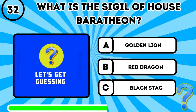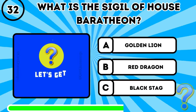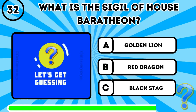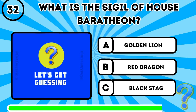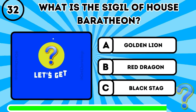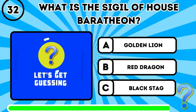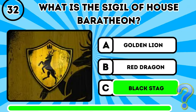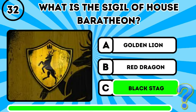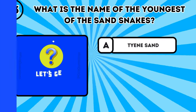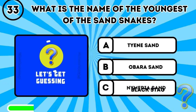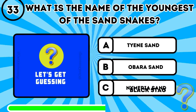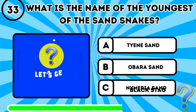Question 31: What is the sword of Corbray of the Vale? It's A, Lady Forlorn. Question 32: What is the sigil of House Baratheon? It's C, Black Stag. Question 33: What is the name of the youngest of the Sand Snakes?